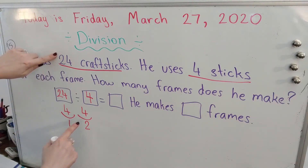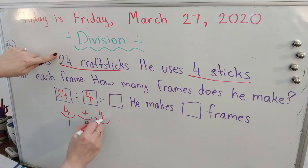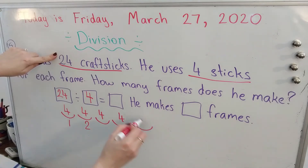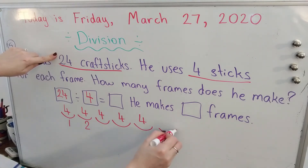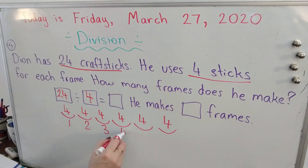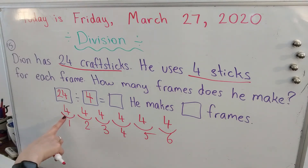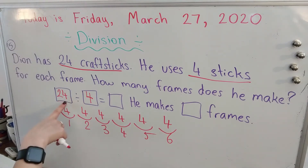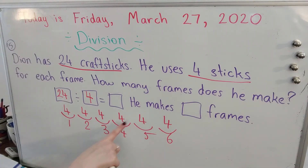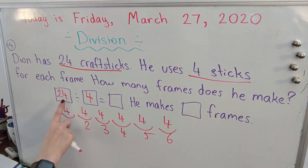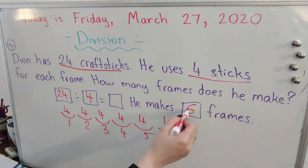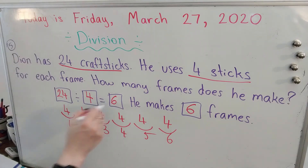We're going to keep using the sticks until we get to 24. 12 sticks, 16 sticks, 20 sticks, 24 sticks — that's 3, 4, 5, 6 picture frames. Did you notice how we counted and divided it? We counted by fours and came to the number 24 — 4, 8, 12, 16, 20, 24. We stopped on 24 because we're done using all the craft sticks, and we saw that he was able to make six frames. He makes six frames. 24 divided by four is six.